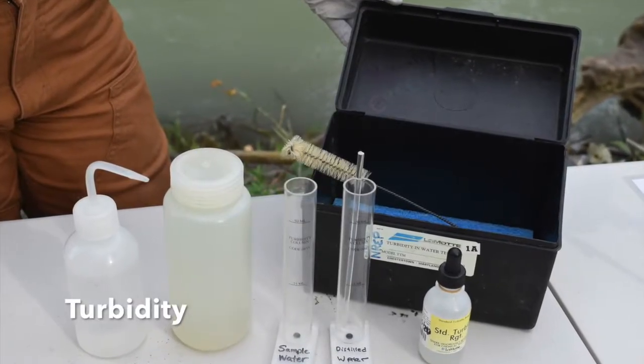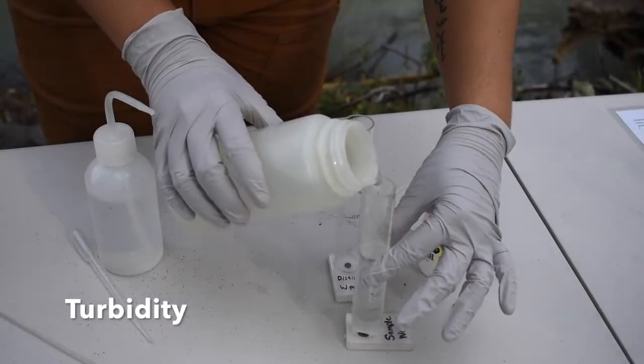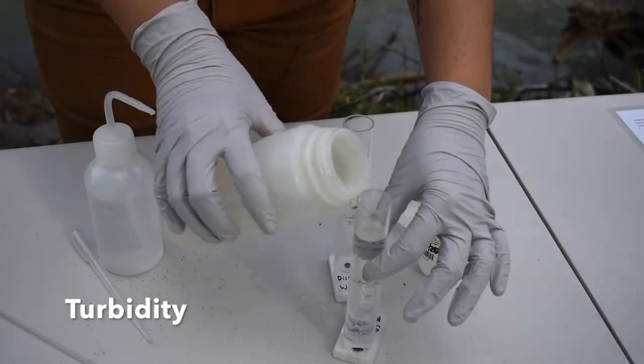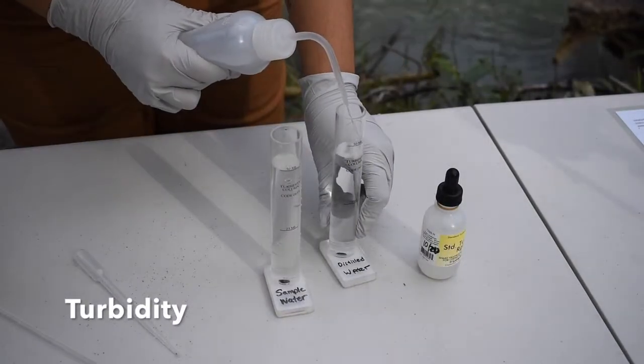Here are all of the materials you will need to test the turbidity. First, we're going to fill each tube with 50 ml of water. One with sample water and one with distilled water.